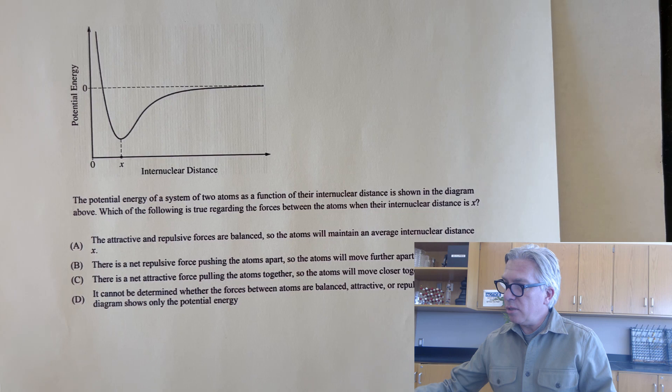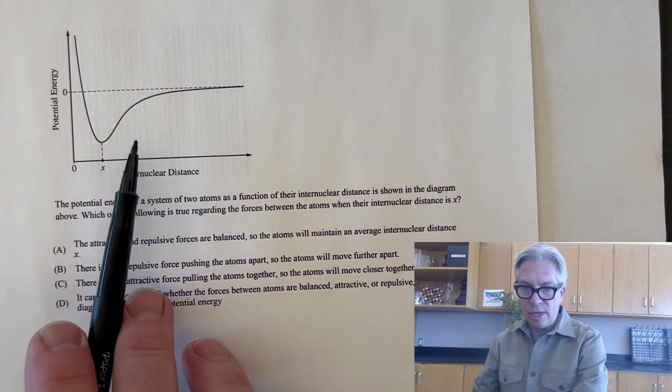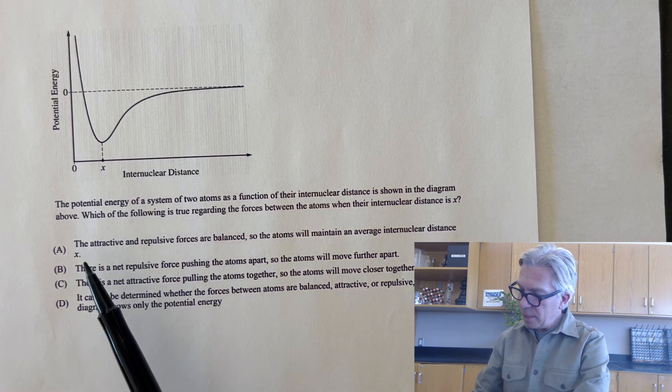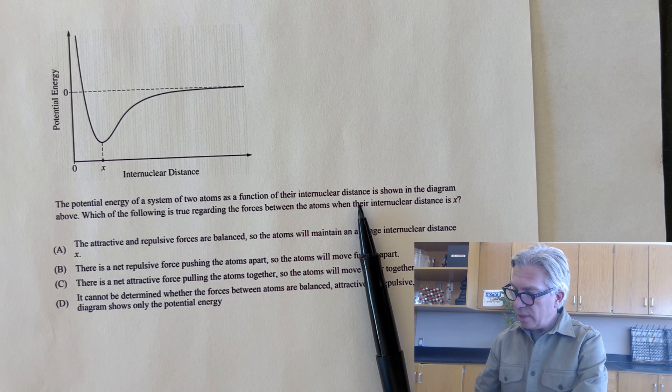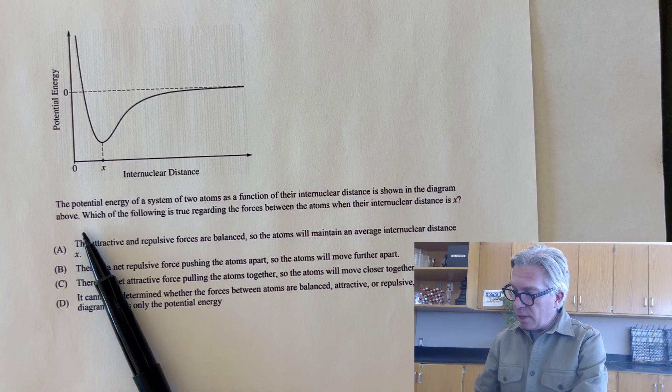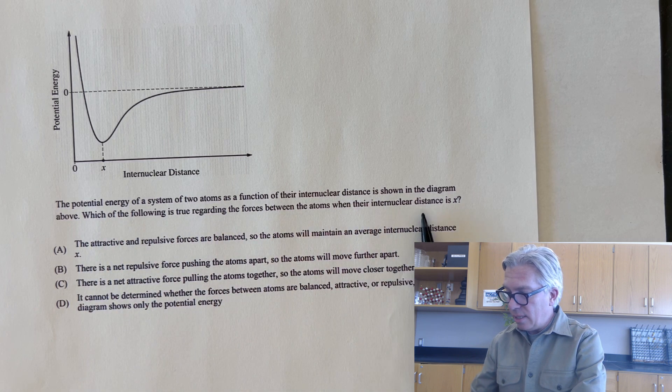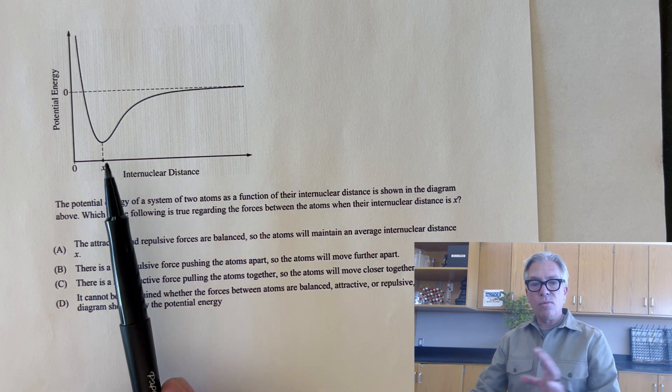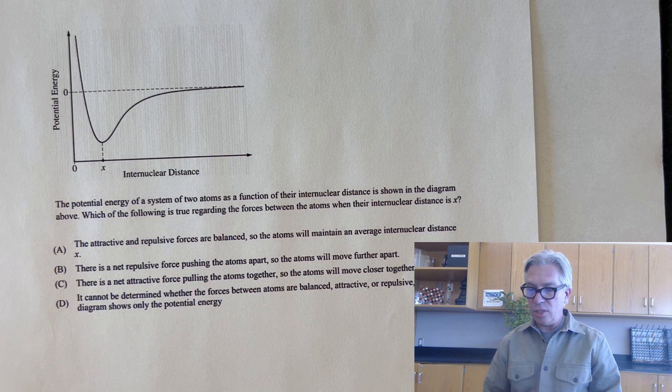Let's take a look at one more multiple choice question. There's our potential energy diagram. Again, it looks like the letter C from the previous example. The potential energy of a system of two atoms as a function of their intranuclear distance is shown in the diagram above. Which of the following is true regarding forces between the atoms when their intranuclear distance is x? So right there. Take a moment, read the choices, pause the video if you'd like, and see if you can guess the correct answer.